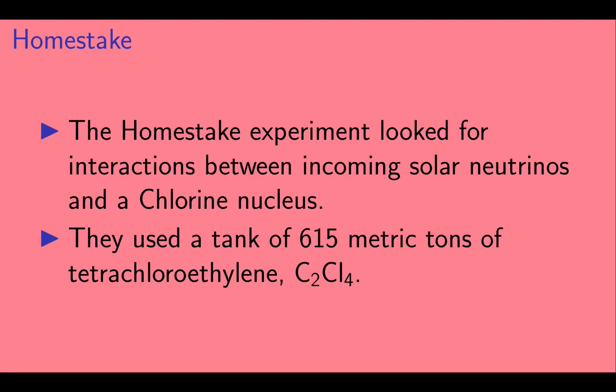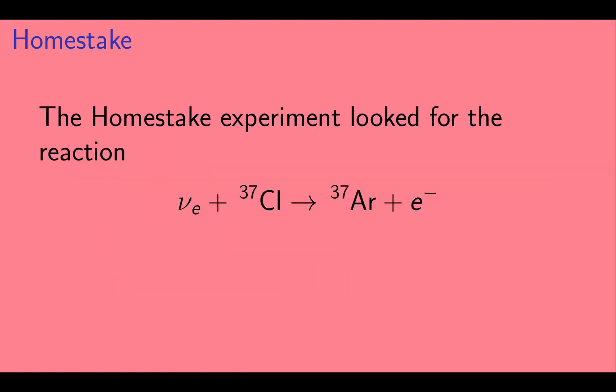Let's talk just a little bit about the Homestake experiment. The Homestake experiment looked for interactions between incoming solar neutrinos and a chlorine nucleus. They used a tank of 615 metric tons of tetrachloroethylene.